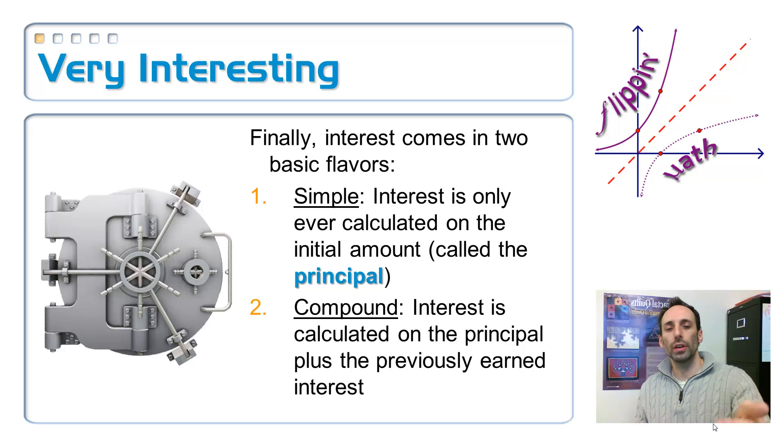So interest is calculated on the principal plus any interest that has been earned in the past. So that makes your amount bigger. So $1,000, I take, say, 5% of that. Whatever I get, I add it back to my $1,000. So the next time I compute my interest, it's not on the $1,000 anymore. It's on the slightly bigger amount, okay? And that's the type of interest that we usually do, compound interest.